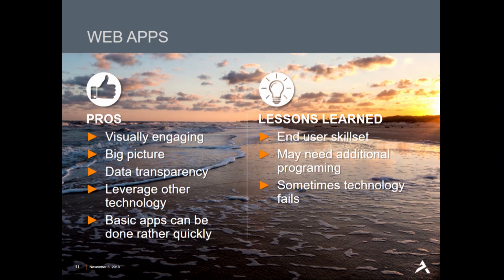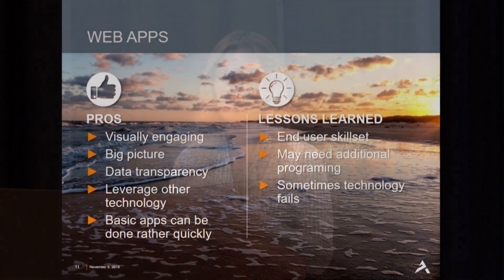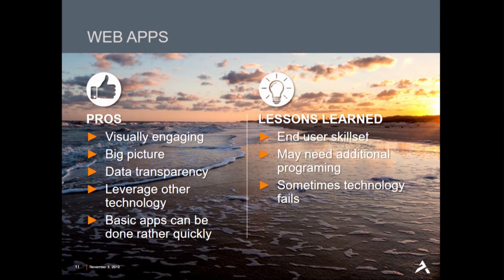The pros of web apps are that they're visually engaging — they really get your client and end user excited about your data more than paper maps and reports can. They're great for the big picture and very easy to convey what you're trying to say. They're awesome for communication with non-GIS personnel because they can see what you're doing easily, interact with the data, and it gives your data a kind of transparency. Leveraging other technology is great too — we added websites to the shoreline access and used a 360 camera linked to a 360 app where you could see what's going on at that shoreline access. And basic apps can be done rather quickly.